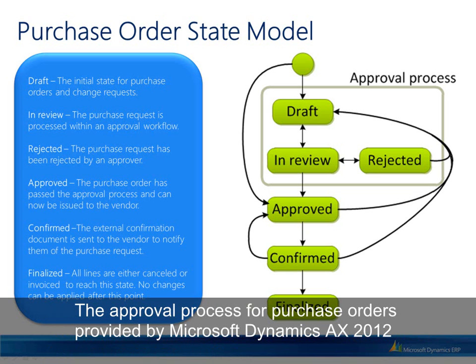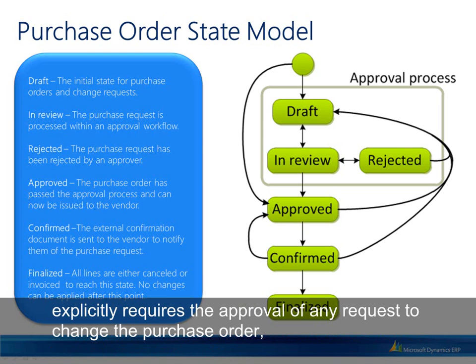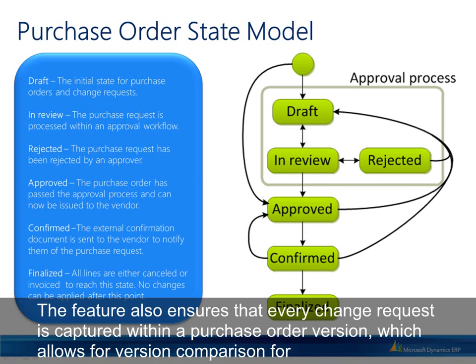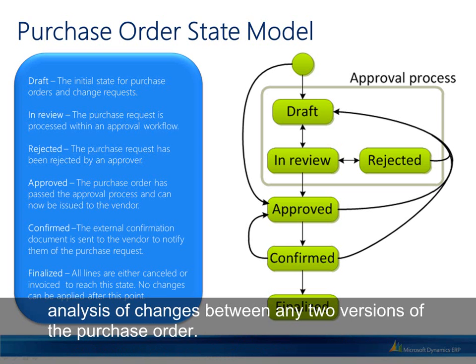The approval process for purchase orders in Microsoft Dynamics AX 2012 explicitly requires the approval of any request to change the purchase order, and changes are not effective before approval. The feature also ensures that every change request is captured within a purchase order version, which allows for version comparison for analysis of changes between any two versions of the purchase order.